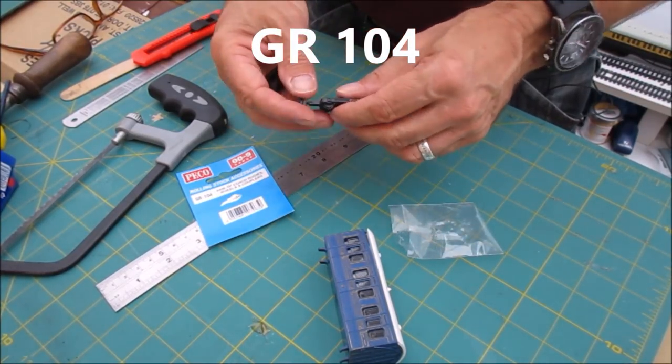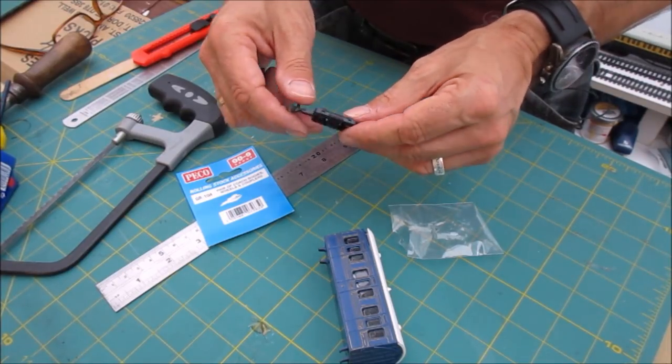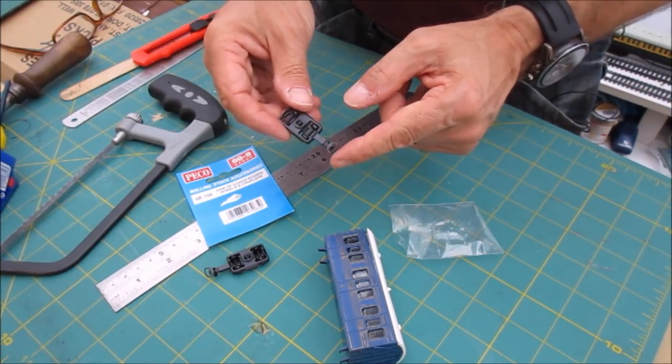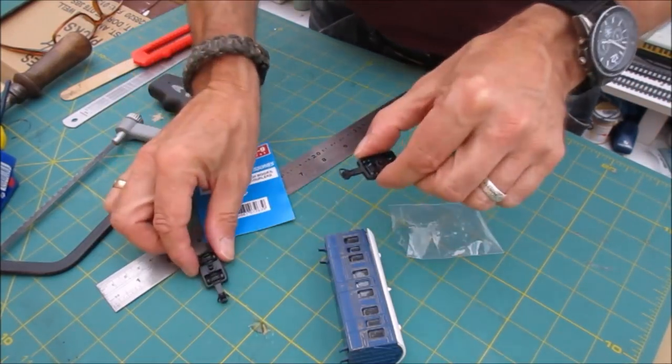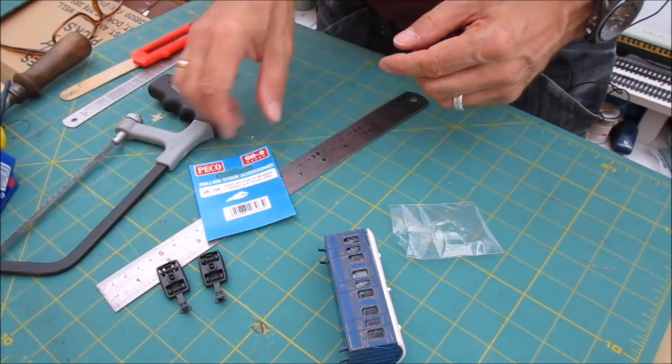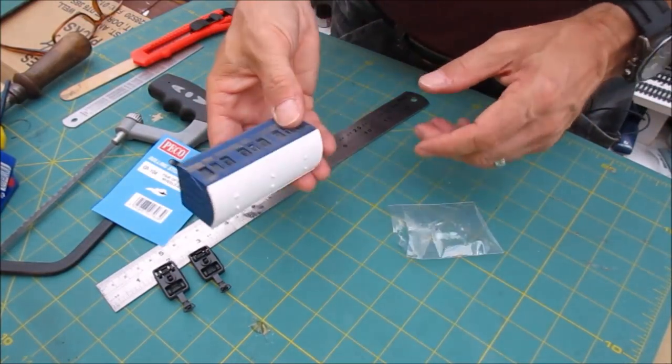There's your part number there, GR104, and these are little bogeys for making your own coaches. They run really smoothly and they've got these much better couplings. What put me off when I was trying to do with 009 was trying to use N gauge couplings which don't work very well. These are £5.25 a pair.